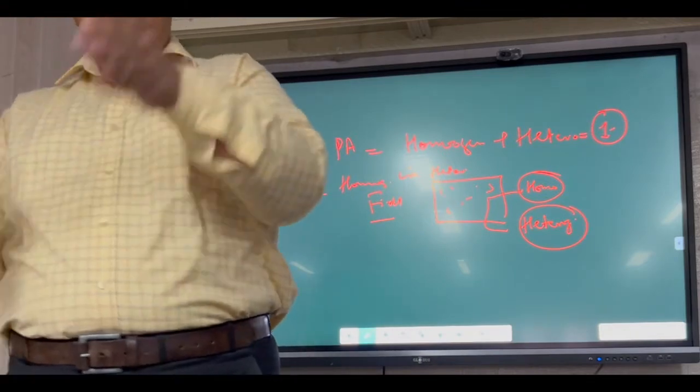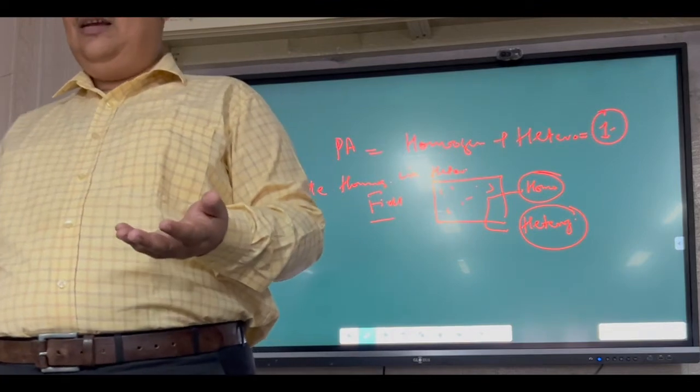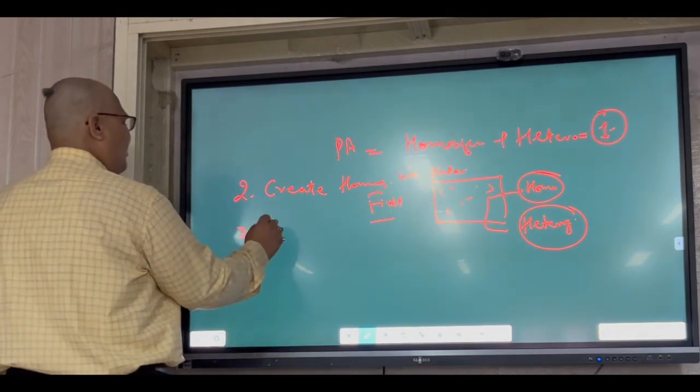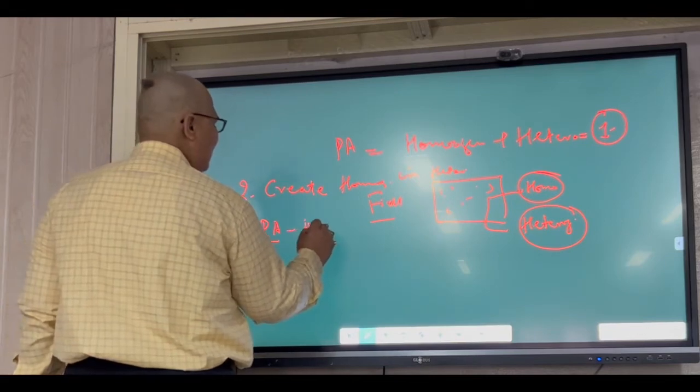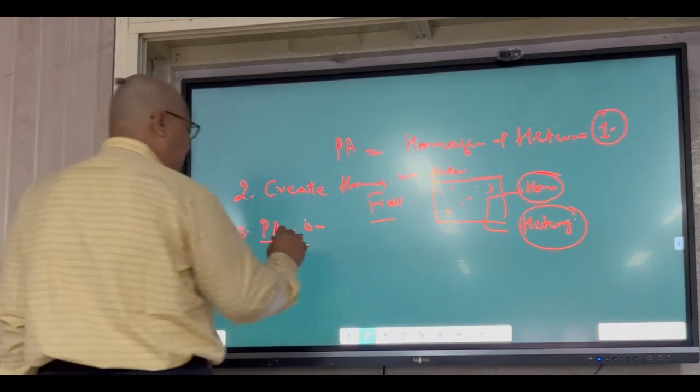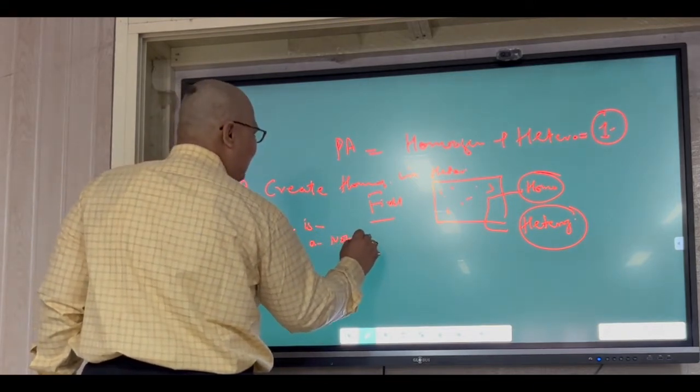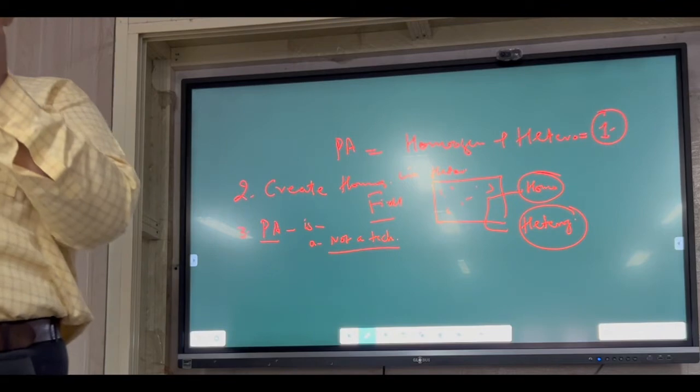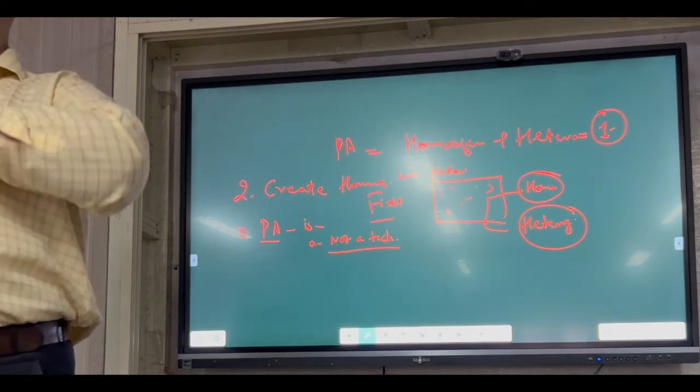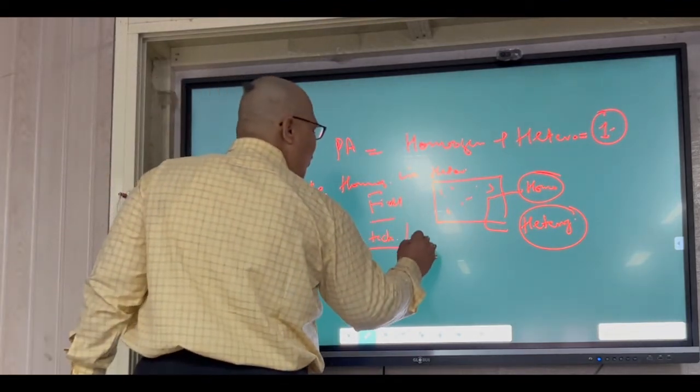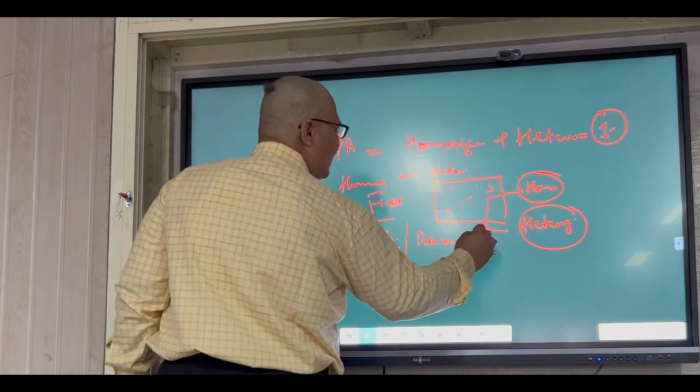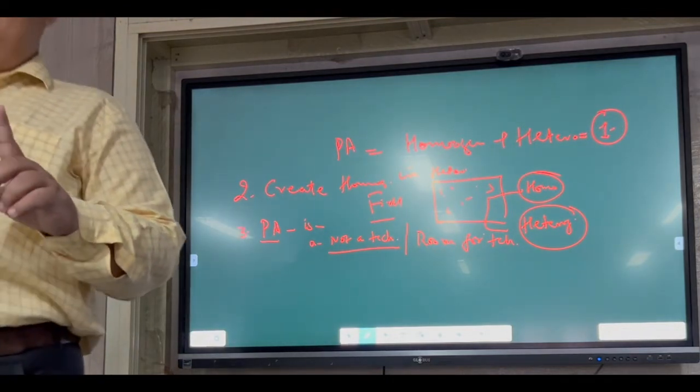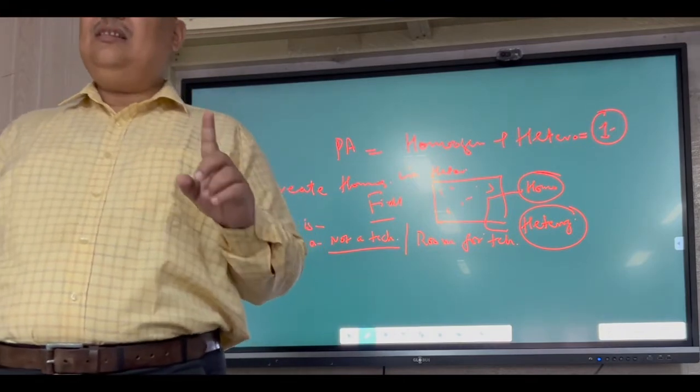So creating homogeneity within them means where we have to give higher, where we have to give lower, which we have to find, which we have to delineate. Then third definition: precision agriculture is not a technology. Be clear. It is a room for technology.